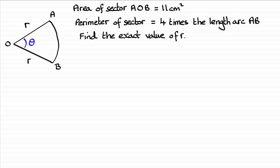We're told that the area of the sector is 11 centimeter squared and also given this fact that the perimeter of the sector equals four times the length of the arc AB. So we've got to find the exact value of R.